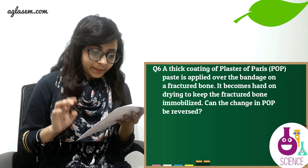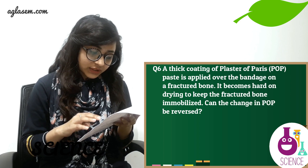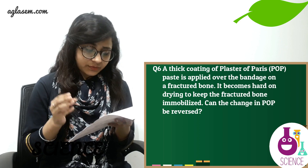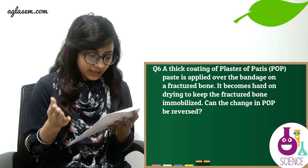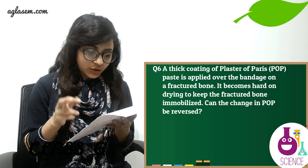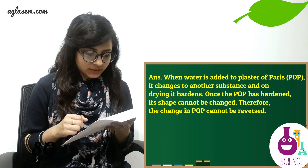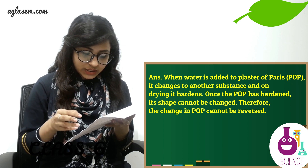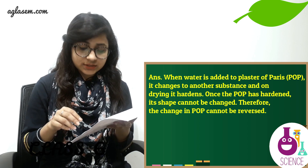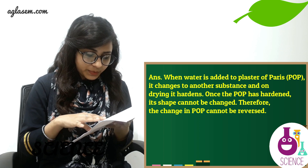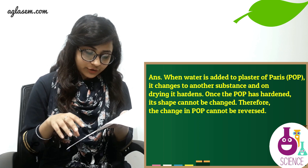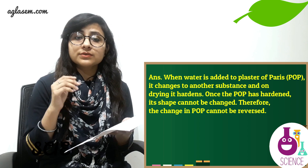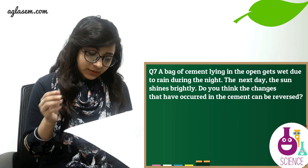Question number six: If a coating of Plaster of Paris paste is applied over the bandage on a fractured bone, it becomes hard on drying to keep the bone immobilized. Can the change in POP be reversed? The answer is: when water is added to Plaster of Paris, it changes to another substance and hardens on drying. Once the POP has hardened, its shape cannot be changed, so the change in POP cannot be reversed.